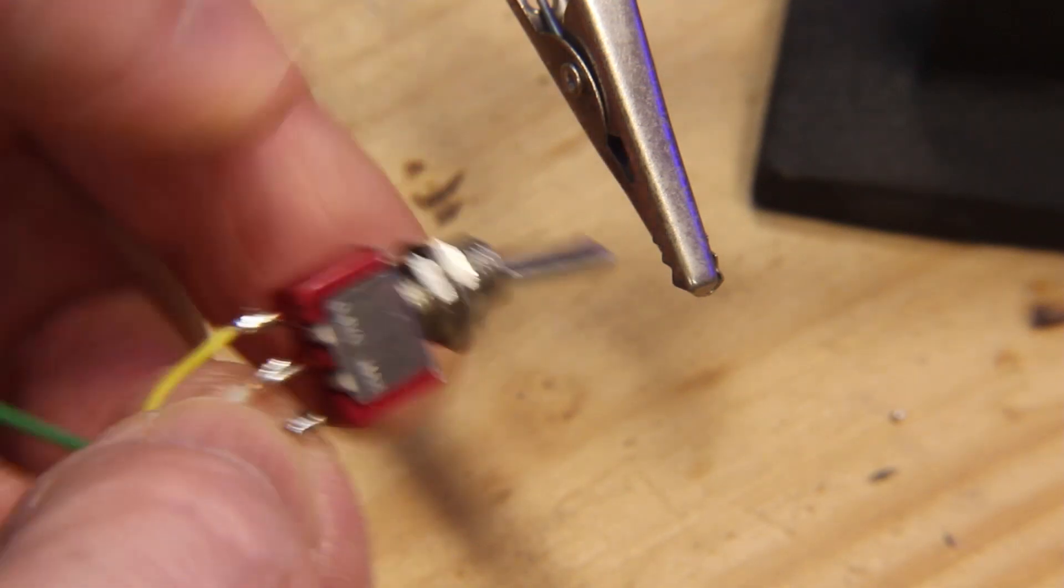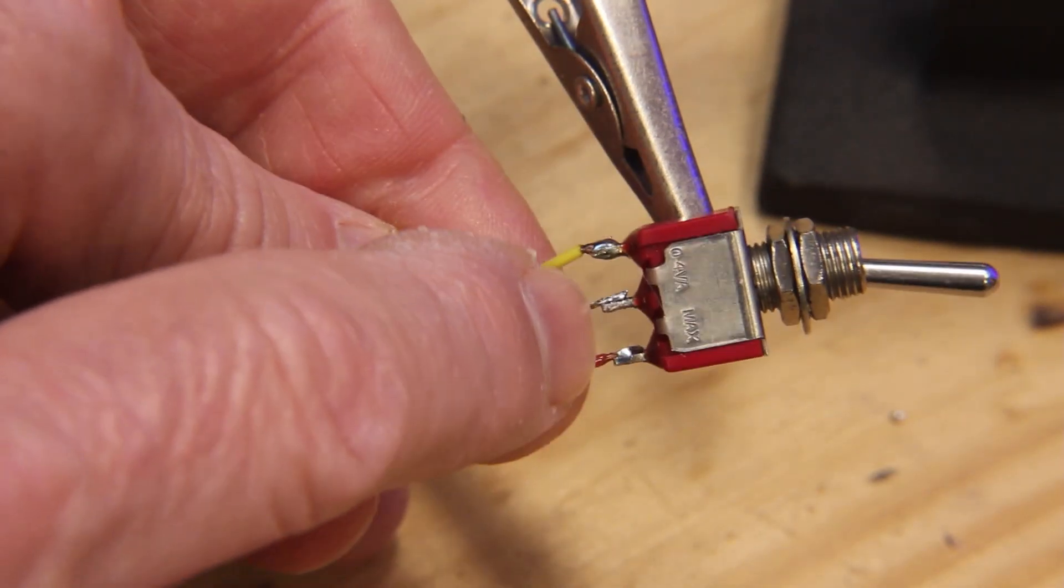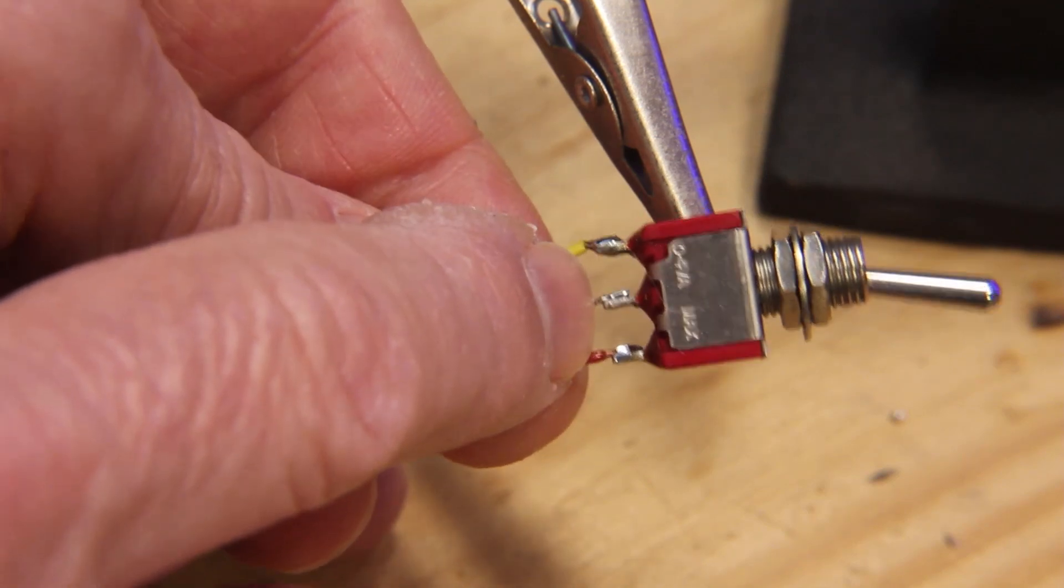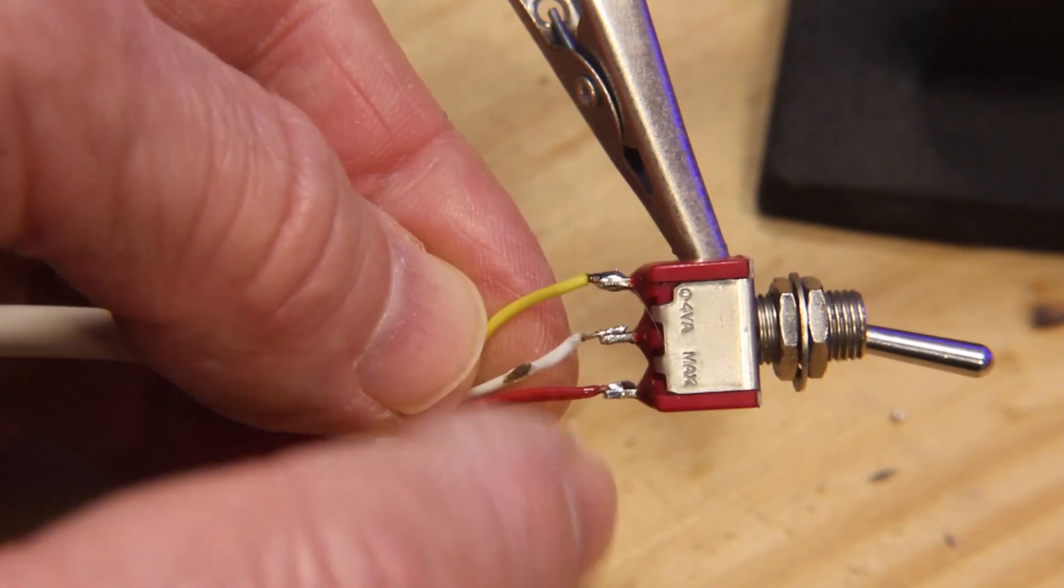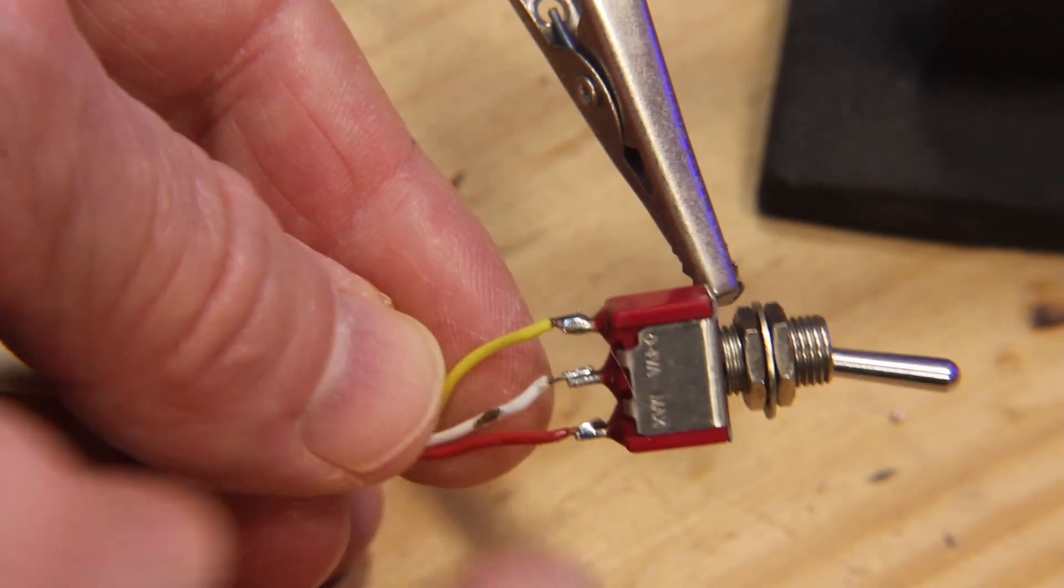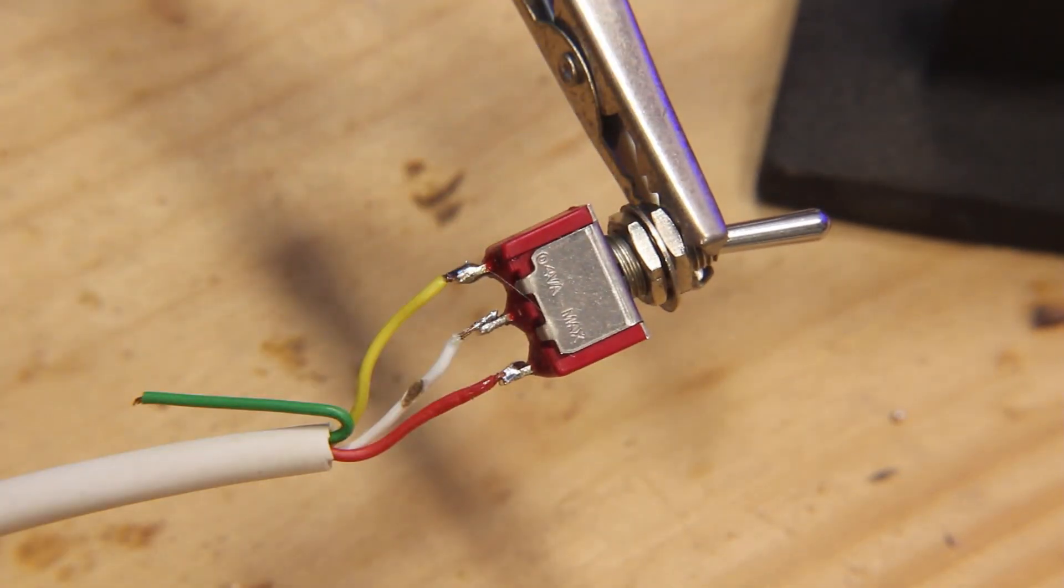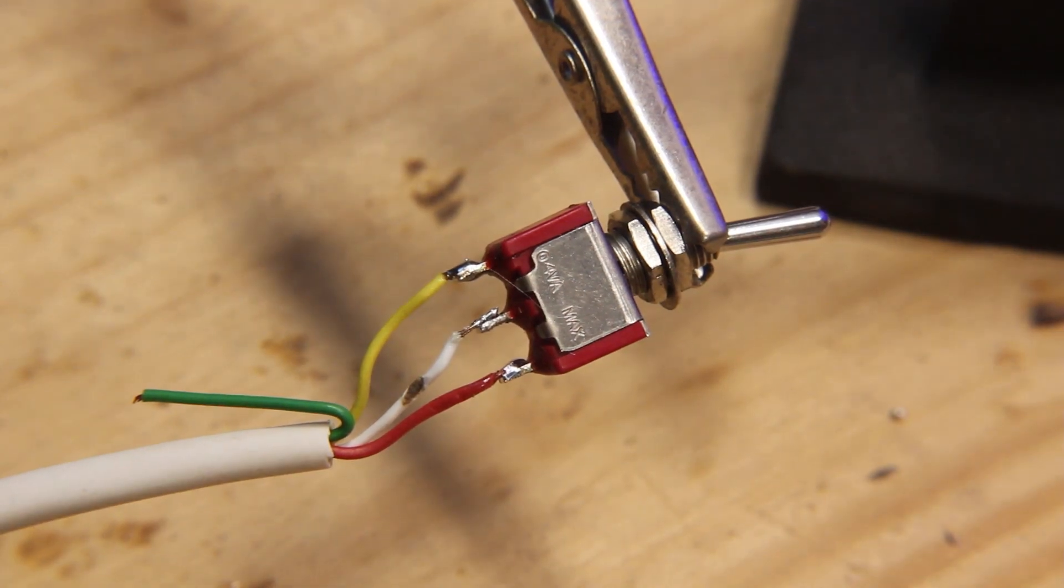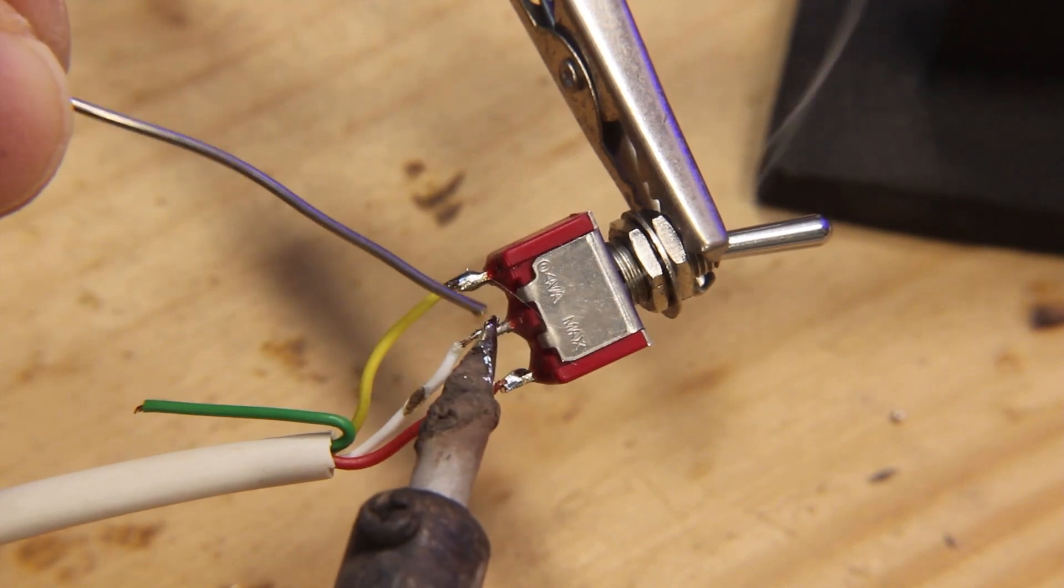And here you can notice this joint is not that good. You can see here the wire is not well attached to the prong of the switch, so this must be redone with a little bit more of solder.